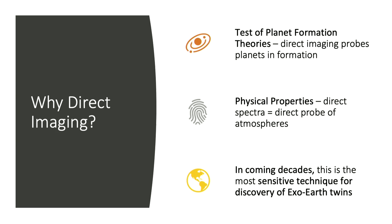Second, we have photons directly from the planets themselves, which means we can really characterize their atmospheres and physical properties in great depth. And third, in the more long term, this is the technique most sensitive to exo-Earth twins. If you want to image a planet like our own around a G star with a period of about one year, this is the way to go.